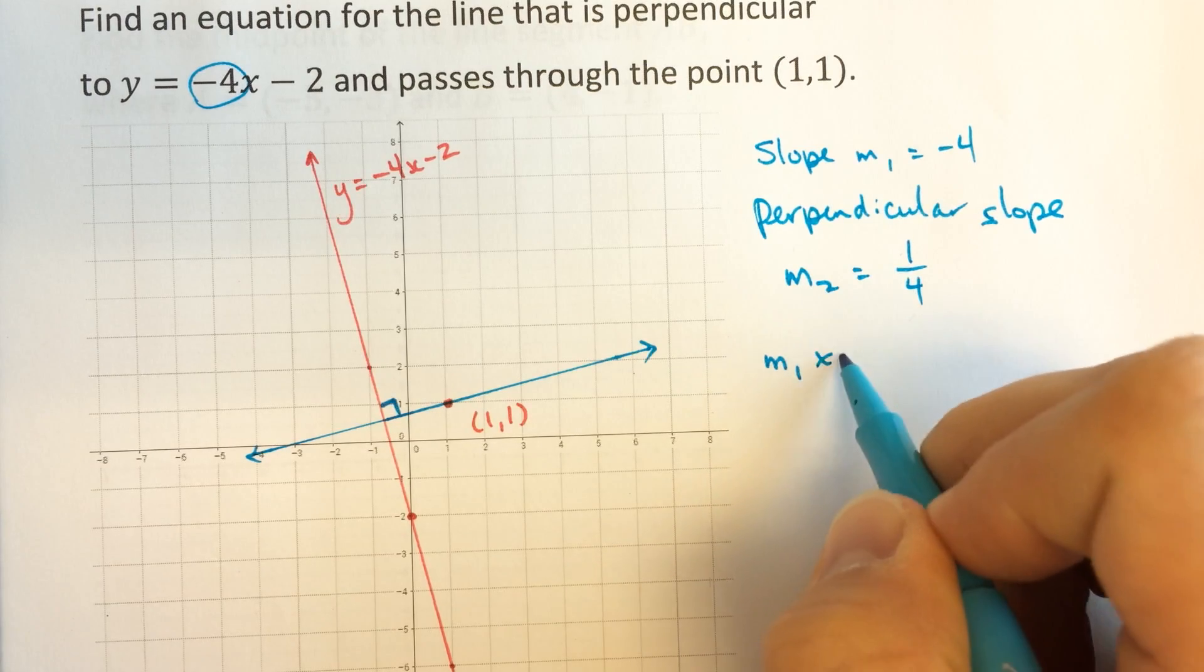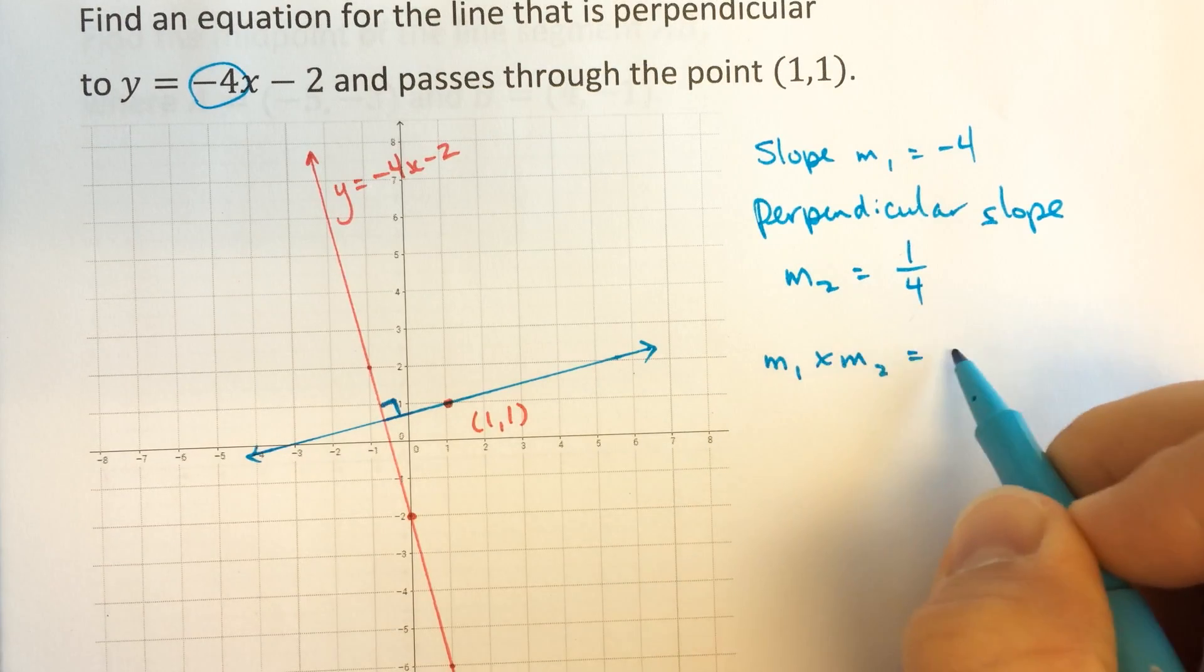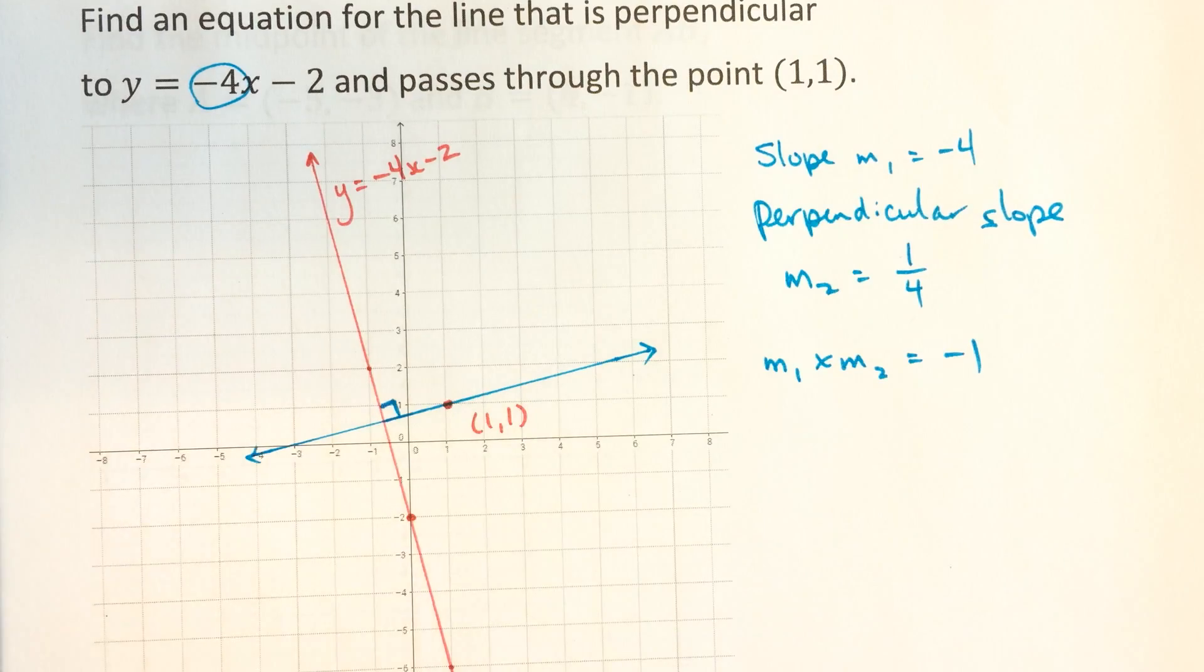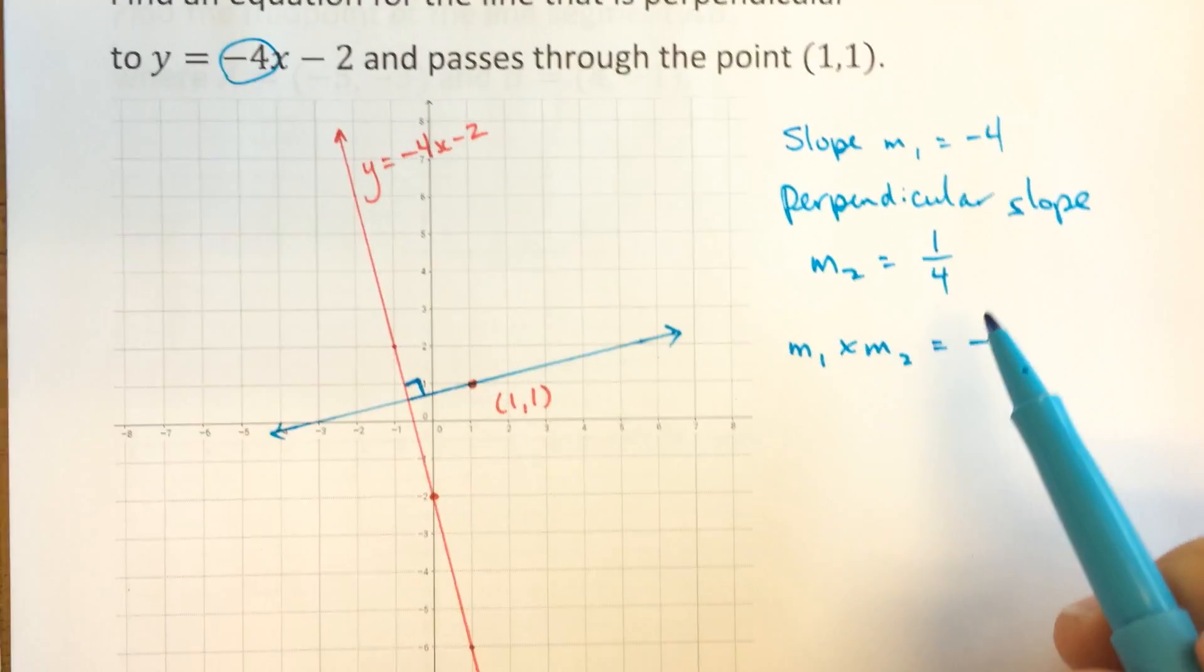You know this because m1 times m2 is equal to negative 1 if two slopes are perpendicular, and they're not vertical or horizontal to mess with things.